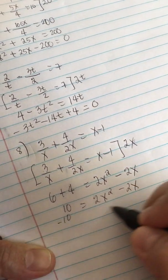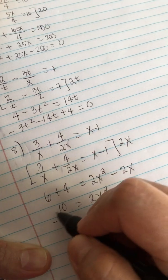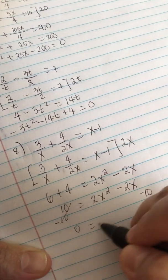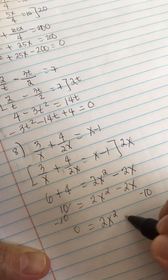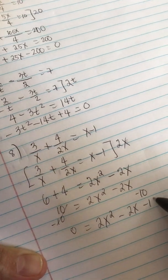Now we subtract 10 and put it here. So it's 0 here equals 2x squared minus 2x minus 10.